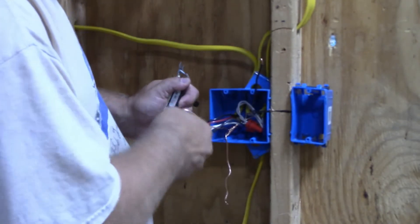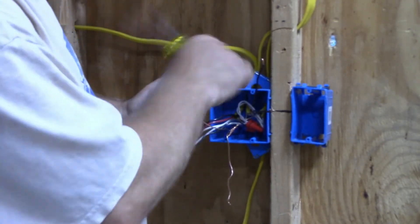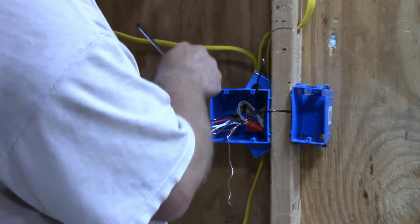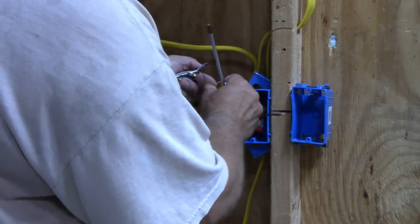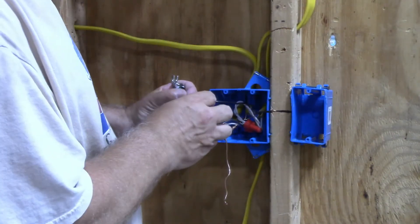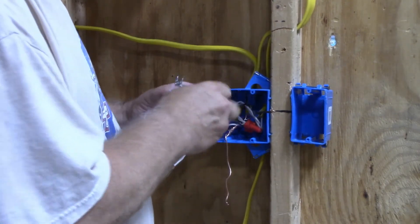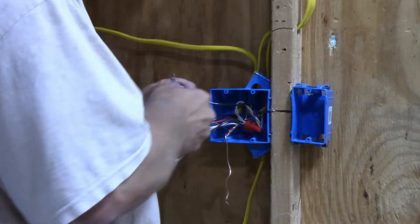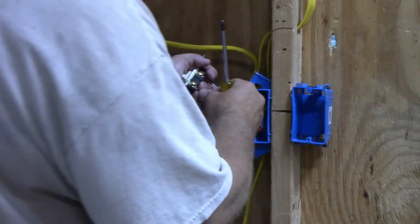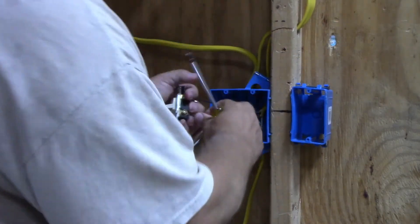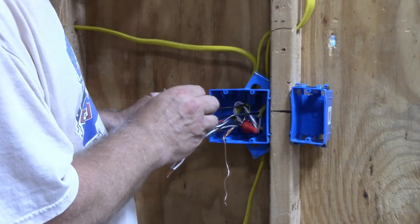Always put the hook in the direction in which you're spinning your screw. The other two, it does not matter which one gets the hot and which one gets the switch leg, since it's a single pole switch. It's either on or off. I'm going to put the hook in the direction in which I turn the screw.